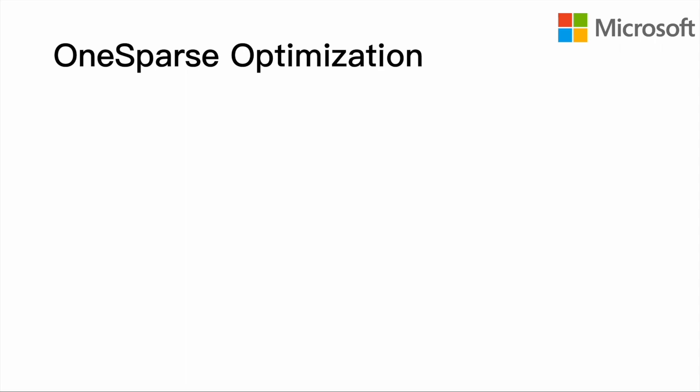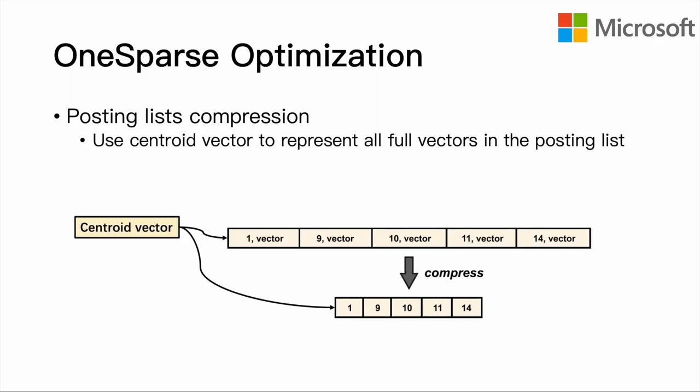In addition, OneSparse applies compression optimization for posting lists of dense vectors. Instead of storing full vectors, dense vectors in a posting are represented by their centroid, assuming the posting list stores a tight cluster with a small radius. In this way, heavy vector distance calculation and disk I/O can be further reduced.